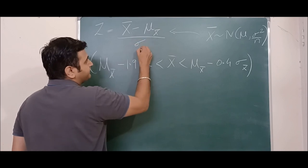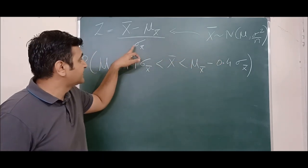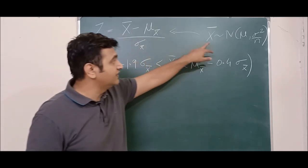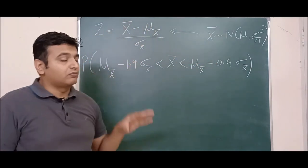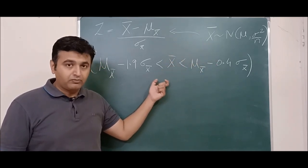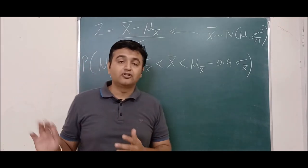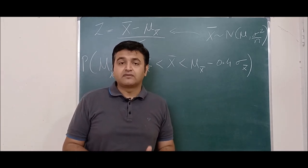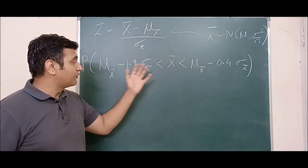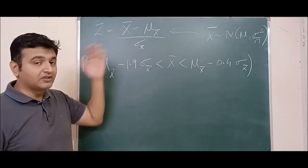The variance of x̄ is sigma squared over n, so the standard deviation of x̄ is sigma over square root of n. Applying this transformation to a normal random variable gives a standard normal random variable. So thanks to the central limit theorem, we can always reduce problems from finding probabilities of x̄ values to finding probabilities of the corresponding z values.